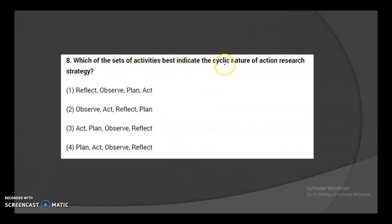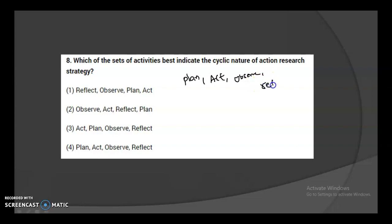Eighth question: which set of activities best indicates the cyclic nature of action research strategy? First, you make a research plan; then you act according to that plan; during the work, you observe your results and feedback; then you reflect back based on your observations and make any necessary modifications. The order is: plan, act, observe, and reflect — so the fourth option is correct.